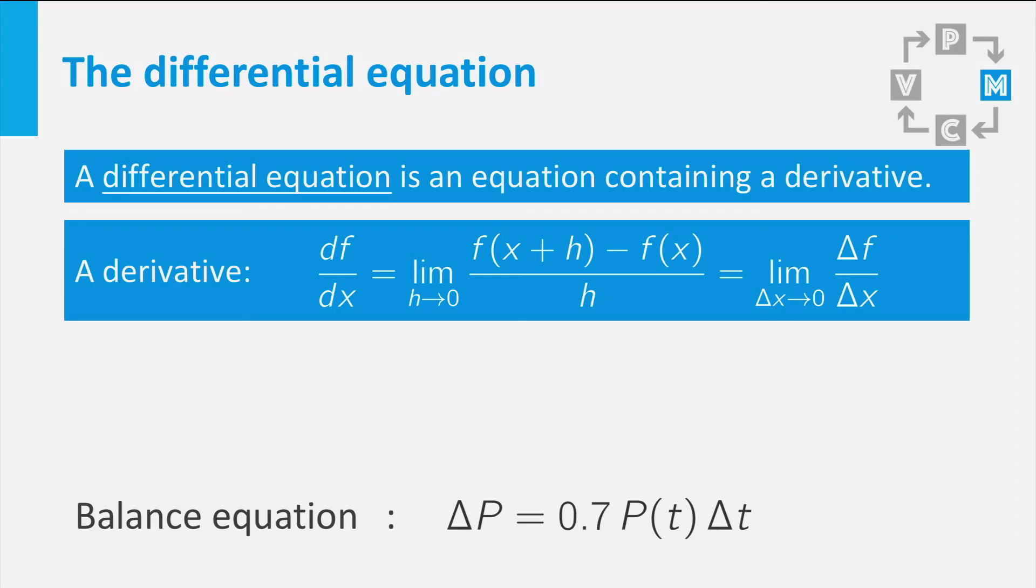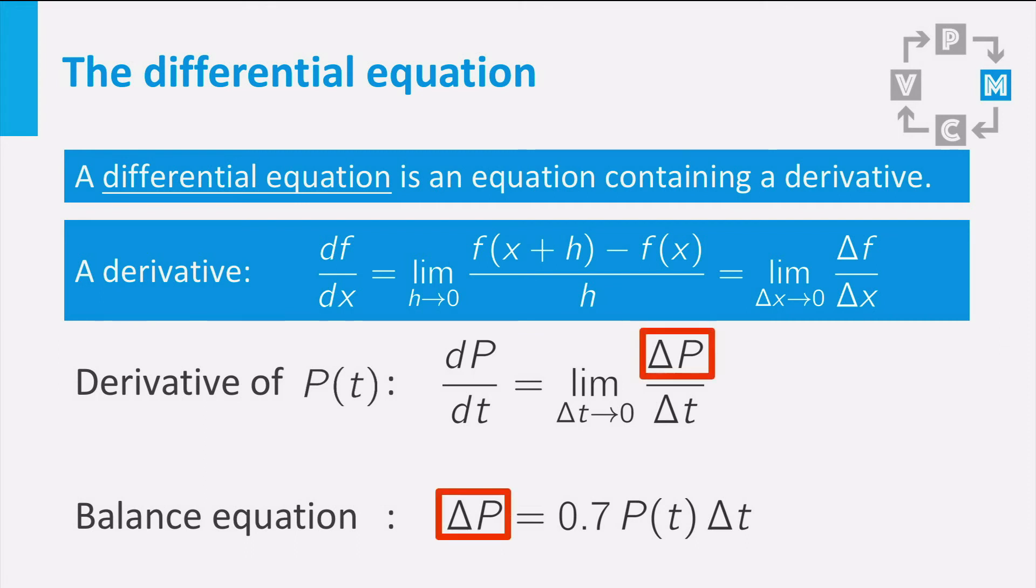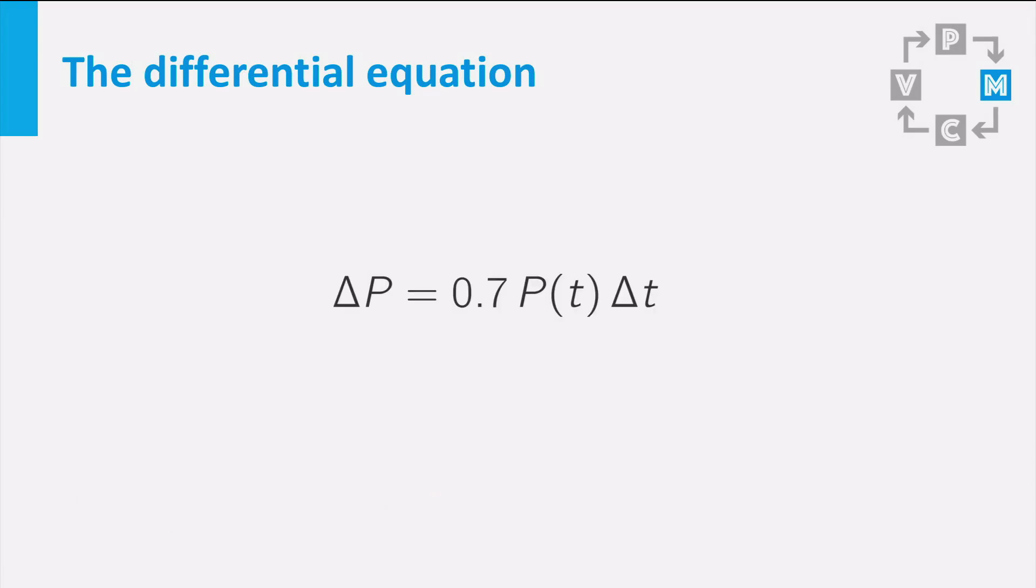If you apply this definition to the population size P of t, you obtain the derivative of the population P of t equals the limit of delta t to 0 of delta P divided by delta t. Now let us compare the balance equation in the population size P and the definition of the derivative of P. Both contain delta P, but in the definition it is divided by delta t and the limit for delta t to 0 is taken. First we are going to divide the balance equation by delta t. You may do this because delta t is not equal to 0. This gives us the equation delta P over delta t equals 0.7 times P.